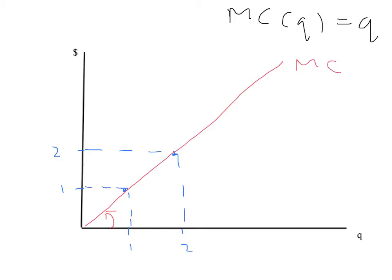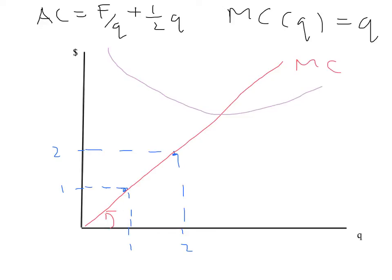What about our average cost curve? Average cost equals F divided by Q plus one-half Q. As Q gets very small, one-half Q goes to zero but F divided by Q gets infinitely large, so average cost starts very high at low quantities. It comes down, crosses the marginal cost curve at the bottom of the average cost curve, and then starts increasing — giving us the familiar U-shape.